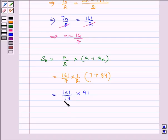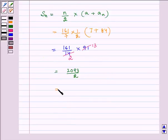Now this gets cancelled. So 7 times 2 equals 14 and 7 times 13 equals 91. This equals 2093/2, which equals 10461/2. Therefore the required sum is 10461/2.